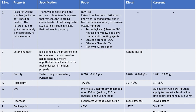To increase the octane number of unleaded petrol, compounds such as tetraethyl lead are added, which liberates lead oxide — though this is not used nowadays. Lead alkyls are used as anti-knocking agents. Ethylene bromide 26%, ethylene chloride 4%, and red dye 2% are added as components of petrol.